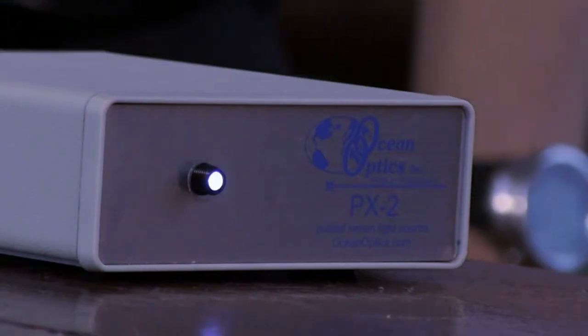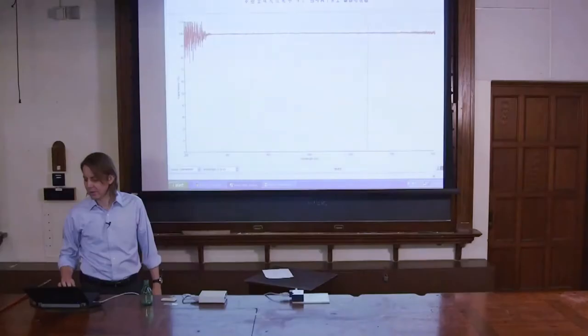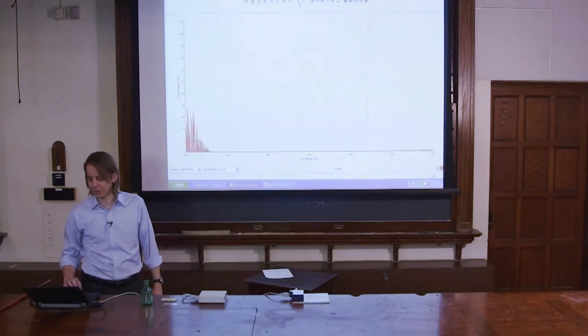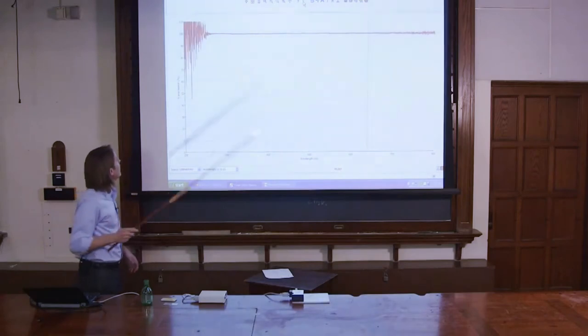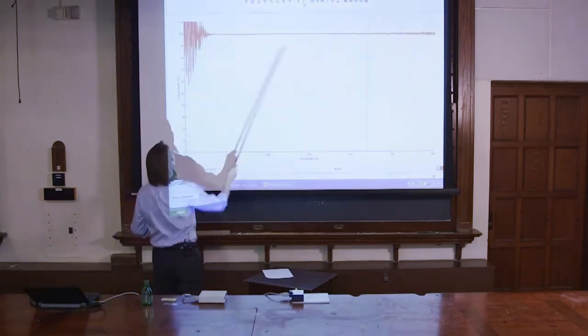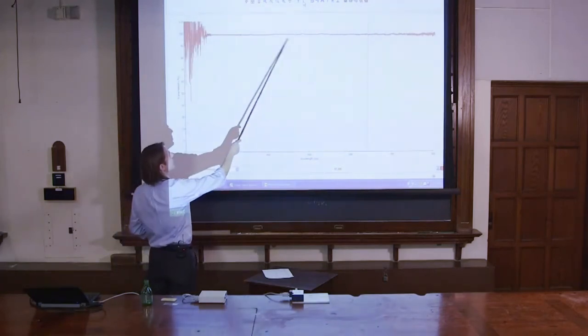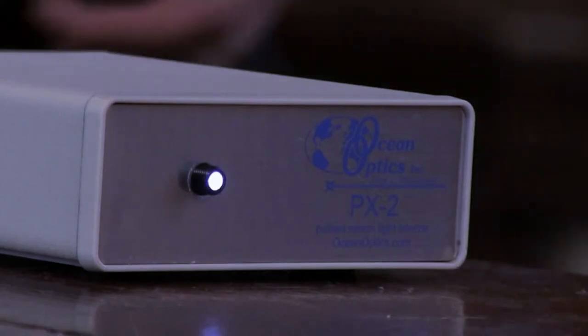So we turn the lamp on, and we calibrate it real quick. So we hit that, turn the lamp off for a second, we'll get a dark reference here. Everything drifts, so it's always good to redo it at the last minute. Turn it back on, and get another bright reference. And now what you're seeing is we've calibrated it, where it's giving us 100% transmission as it just goes through air. It's drifting up and down a little bit, everything's not perfectly stable. So we calibrate it again.